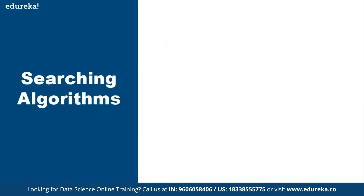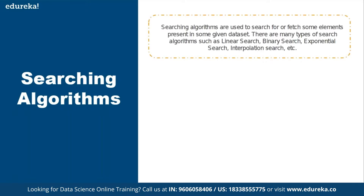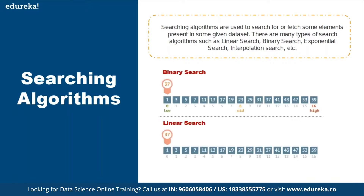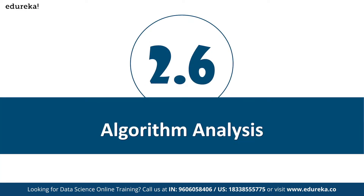Searching algorithms are about how you identify a particular element in a set of elements. We have different techniques: linear search, binary search, exponential search, and interpolation search. Binary search uses a divide and conquer model — you take the entire list, divide it into two halves, find the midpoint of each half, and repeat until you find the element. That's why it's called binary — you divide into two halves every time. Linear search compares one element at a time with each element sequentially until found.